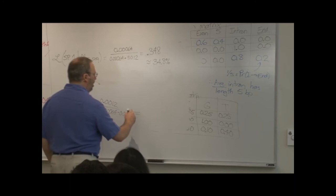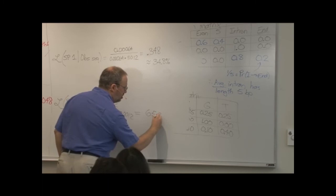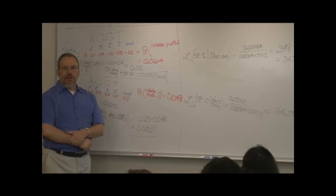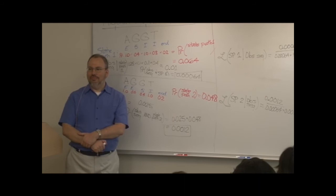0.348. That's what someone else got as well? Okay. which translates then to a 34.8% likelihood of state path 1. Likewise, if we do state path 2, that should come out to 65.2%.